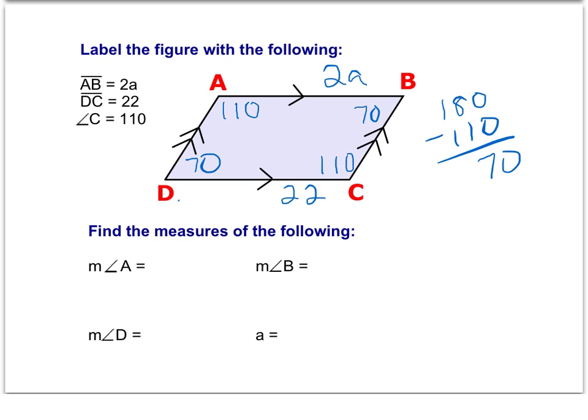So we can go ahead and fill in the bottom. The measure of angle A is 110 degrees, the measure of angle B is 70 degrees, and the measure of angle D is also 70 degrees.